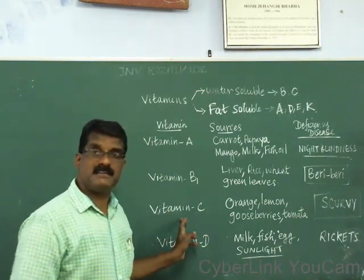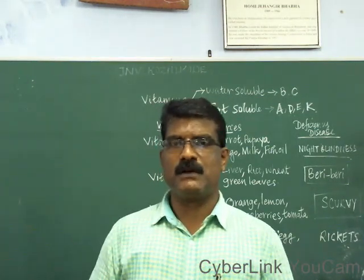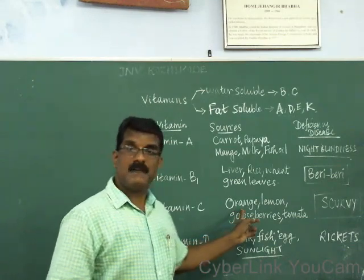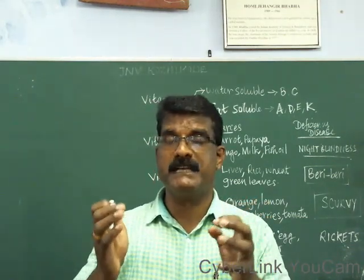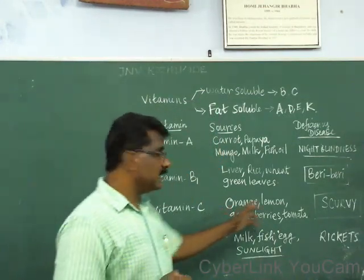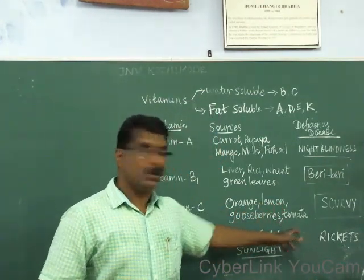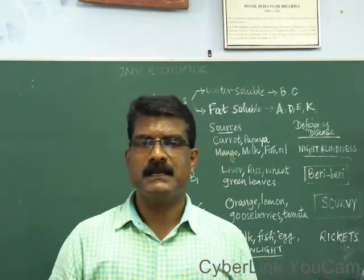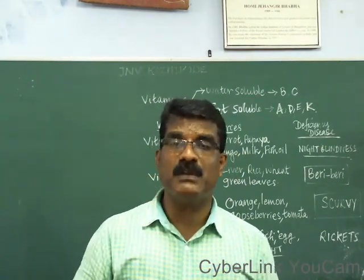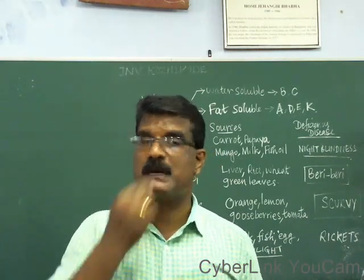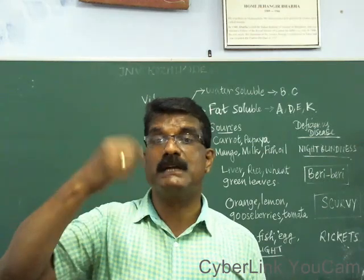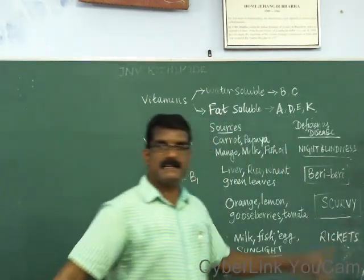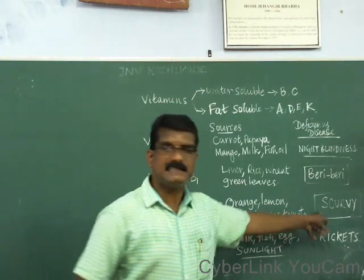The next vitamin is Vitamin C, one of the most important vitamins to protect our body. Vitamin C is found in all citrus fruits — citrus fruits like orange, lemon, gooseberries, and tomato. All these are rich sources of Vitamin C. If Vitamin C is less in your diet, your teeth and gums will be affected. There will be pus formation in your gum, bleeding through the gum, and the teeth will become loose. That condition is known as scurvy — the deficiency disease of Vitamin C is scurvy.